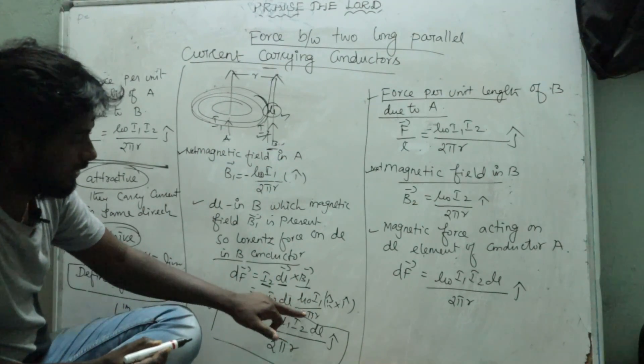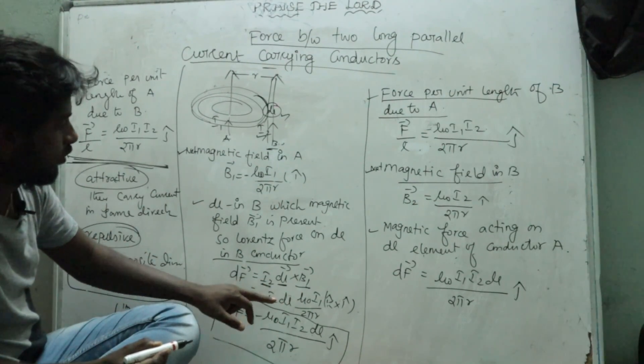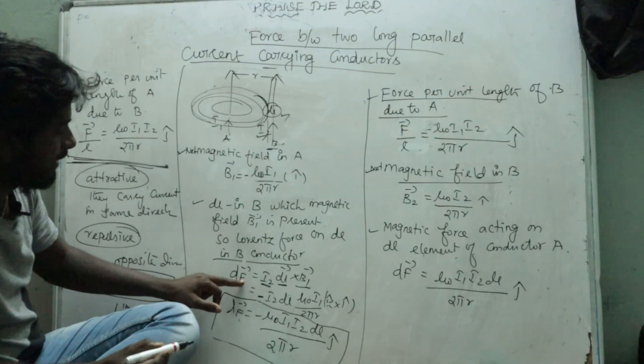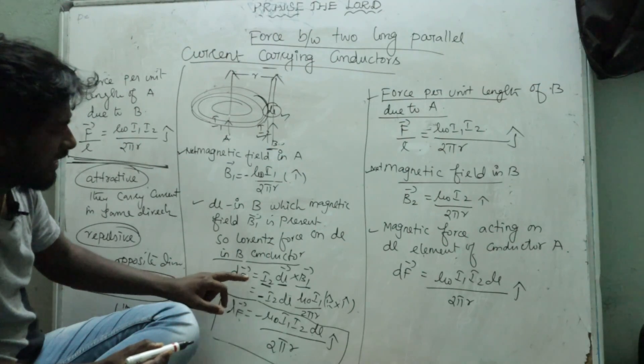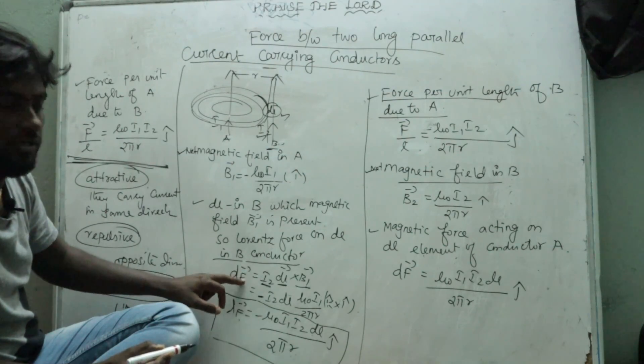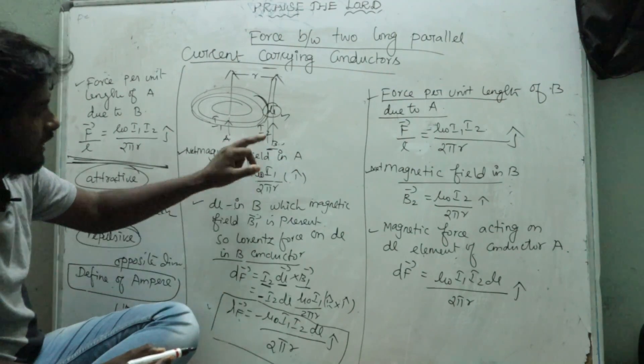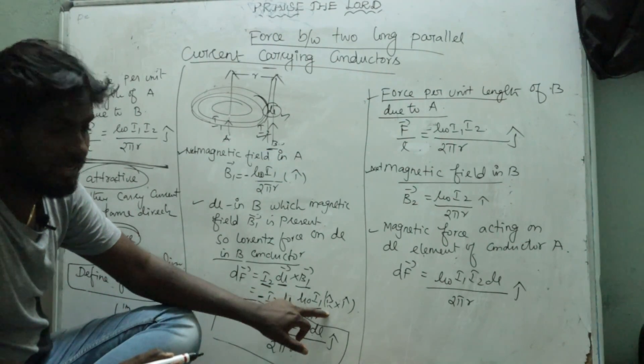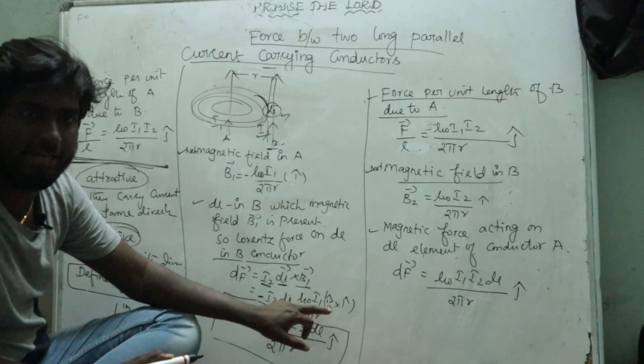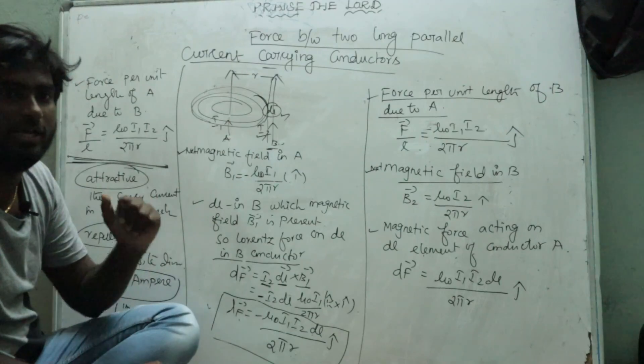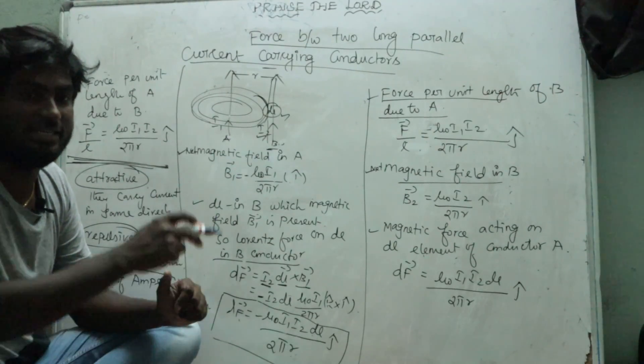The value of B1 is used here. The conductor B experiences the Lorentz force. The direction involves the K cap, along the Z-axis.